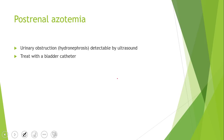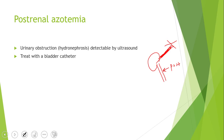For post-renal azotemia, you've already ruled out the kidney issues. Now you're thinking about what's happening after the kidney. Usually it's just an obstruction — something in there and the urine isn't able to get out. You can detect this with an ultrasound, a little Doppler ultrasound, and then treat it with a catheter to fix the problem.